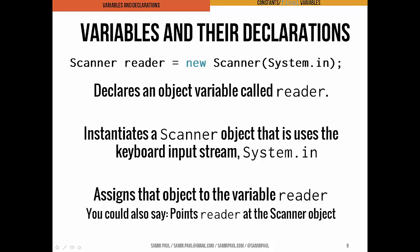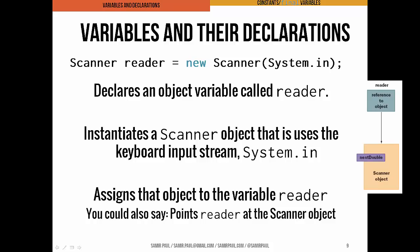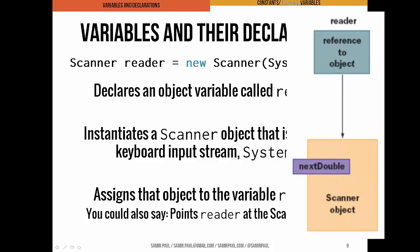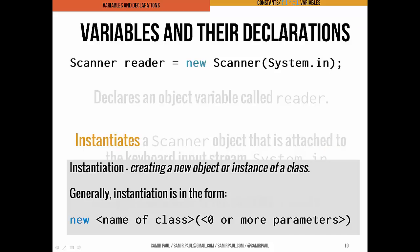That last statement deserves another look. We're declaring an object variable called reader — reader is actually an object variable — and we're also instantiating a new Scanner object that takes as its input the keyboard inputs from System.in. You can think about this as a variable called reader that's pointing to an object of type Scanner. I like to imagine this as a big Scanner object with a little tag pointing to it, and that tag is called reader.